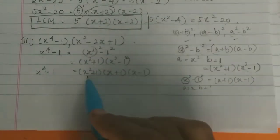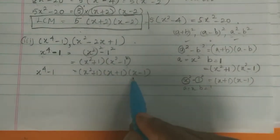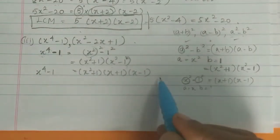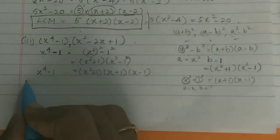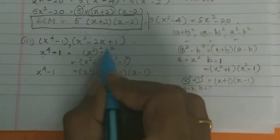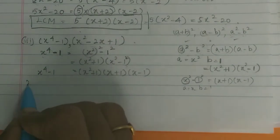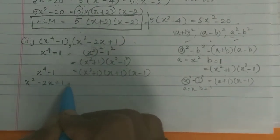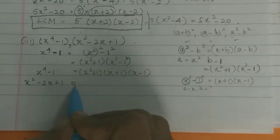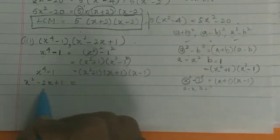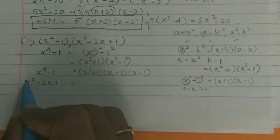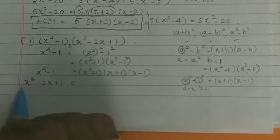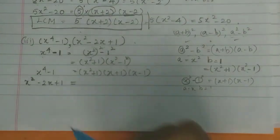So x⁴ - 1 factorizes to (x²+1)(x+1)(x-1). Now for x² - 2x + 1, this is a quadratic equation. We factorize it as a product of two binomials.